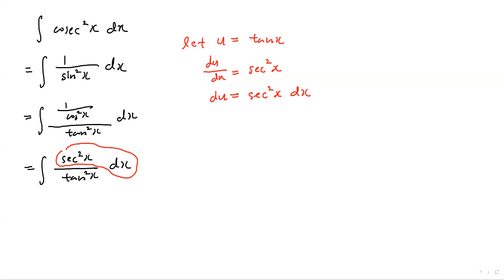The integral of—I'm going to replace secant-square-x dx with du—so this would be 1 over u-square du. This simplifies to just 1 over u-square du. It's called the u-substitution.